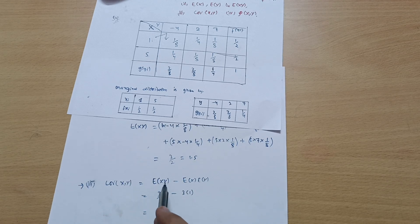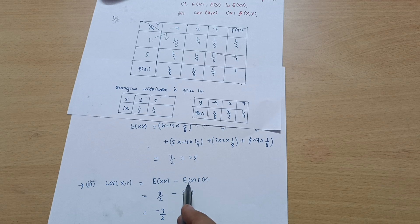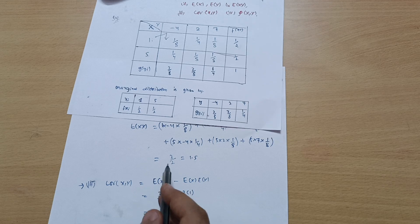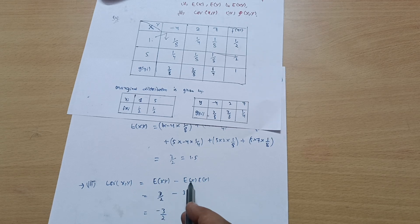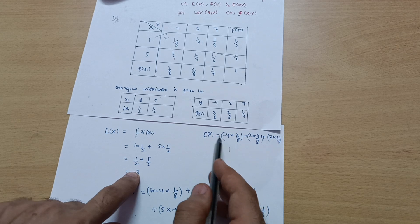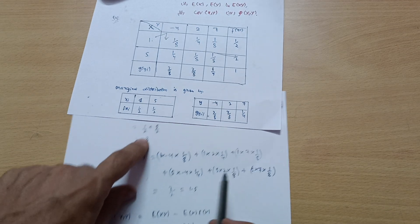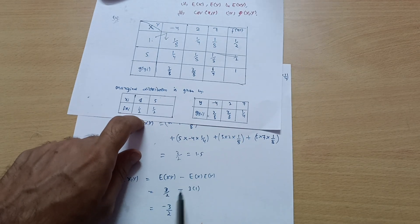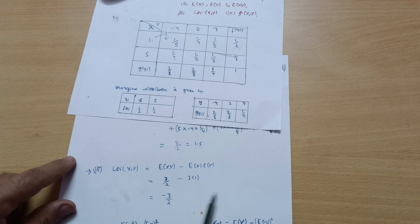Now we calculate the covariance. The formula is Cov(X,Y) = E(XY) − E(X)·E(Y). So that is 3/2 − 3×1 = 3/2 − 3 = −3/2. The covariance of X and Y is −3/2.